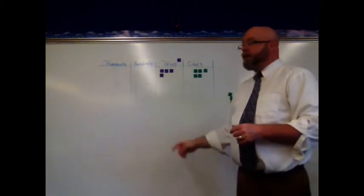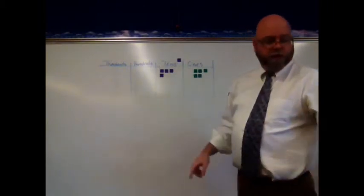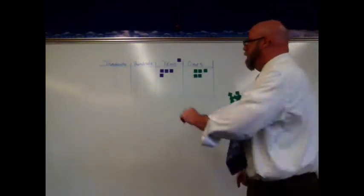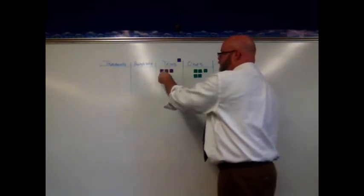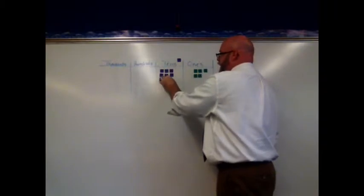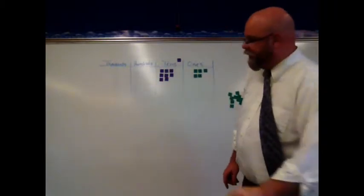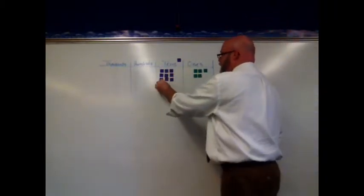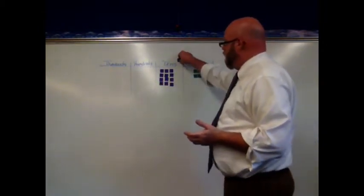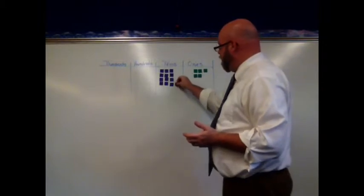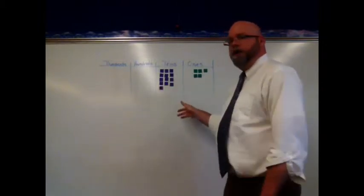Now we're going to multiply these four tens by three as well. So one, two, three, four, five, six, seven, eight, nine, ten, eleven, twelve tens, plus the one ten that we had left over. So we have 13 tens here.